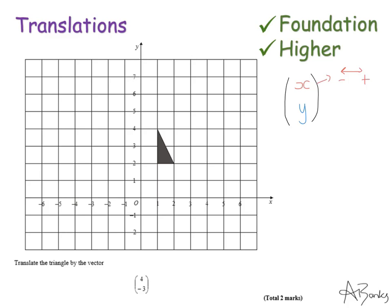In this question, because the top number is a 4, it means we're going to move four squares to the right.